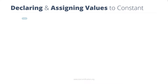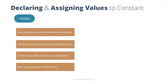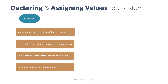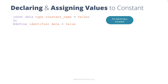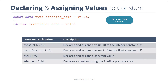Recall the rules for naming variables — you need to follow the same rules for naming constants as well. Once you name the constant, you need to declare the type of value it will contain and then assign a value to it. Programming languages use preprocessor directives and keywords for declaring a constant. The const keyword is used for declaring a constant. The syntax for declaring a constant and some examples for assigning a value to it are shown on the screen.